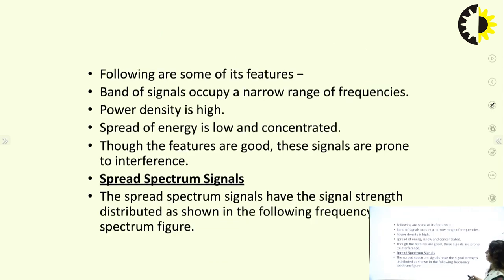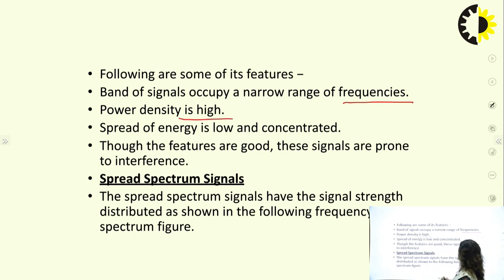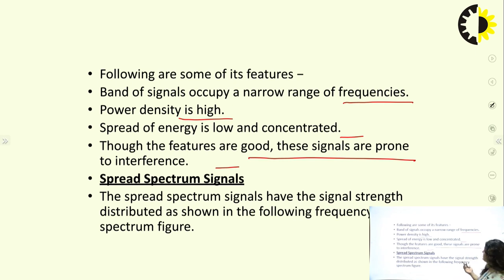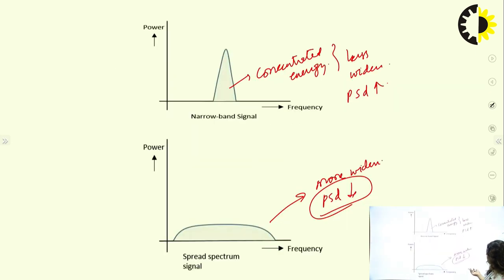For narrow band signals: the band of signals occupies a narrow range of frequencies, power density is very high, spread of energy is low and concentrated. These features may be good, but these signals are very prone to interference — they can be easily interfered with by enemy signals or jammed. For spread spectrum signals, the signal strength is distributed more widely; they have very low PSD and are more widen, making them not easily interfered with.